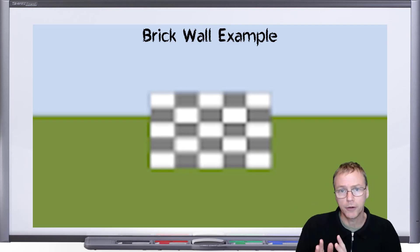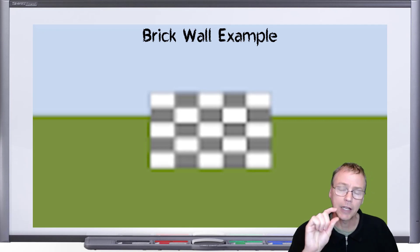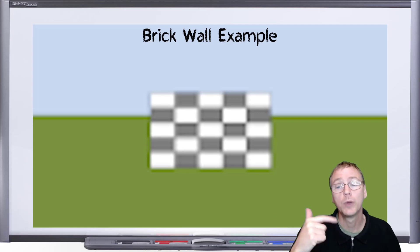They've begun to blur one into another. But at this distance, the angular size of each individual brick is still well above the Rayleigh criterion. And we can resolve that that is in fact a checkerboard pattern.